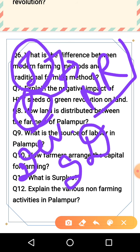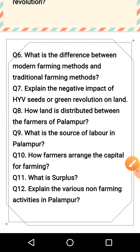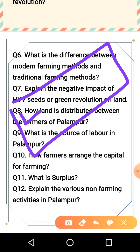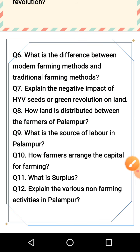Next: how is land distributed between the farmers of Palampur? As explained earlier, in Palampur land is unequally distributed. Some people have no land at all, some have a very small piece of land, and some have very large landholdings.